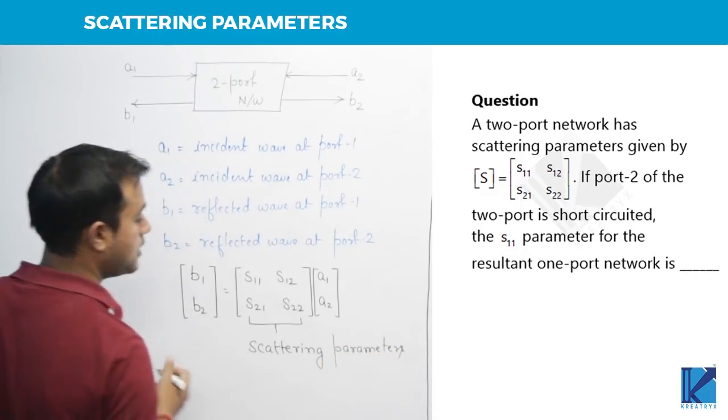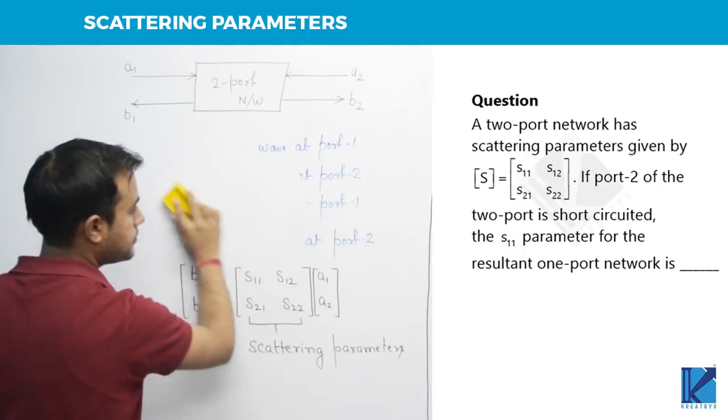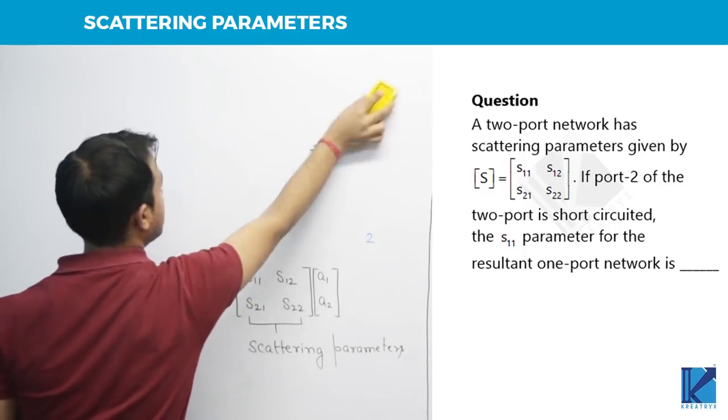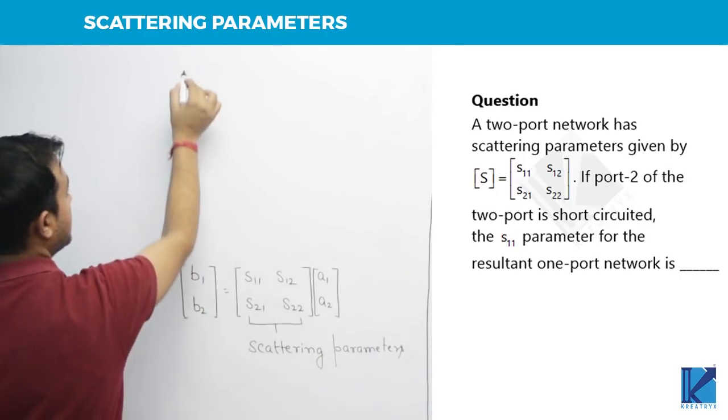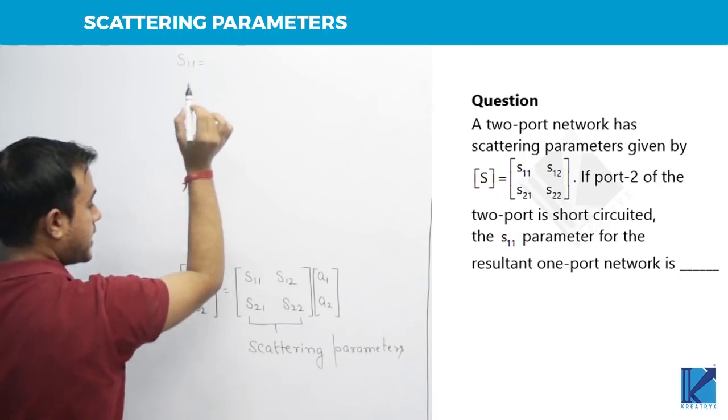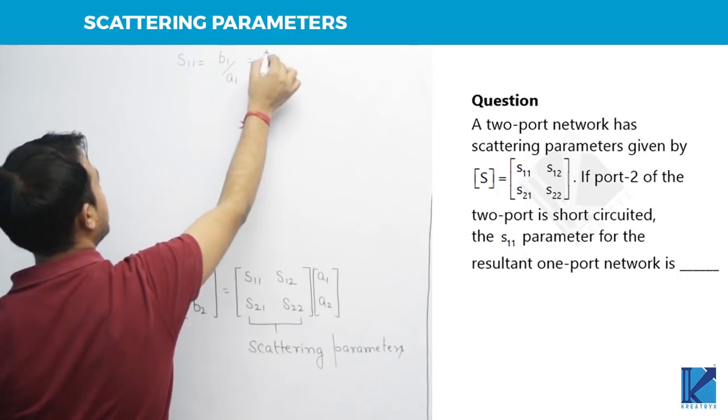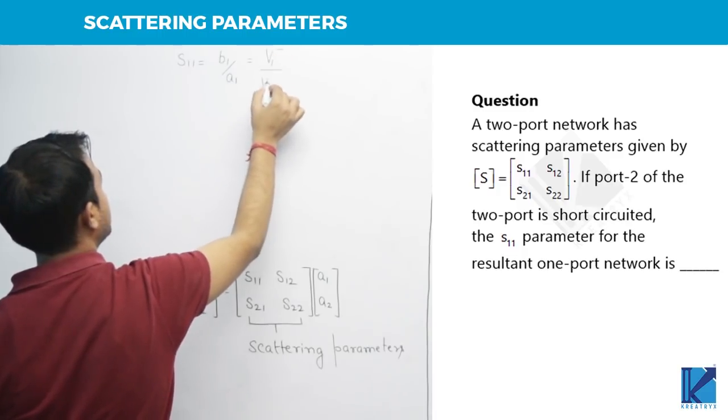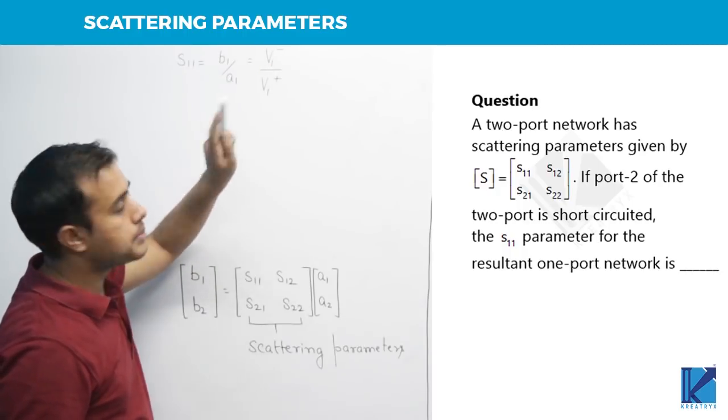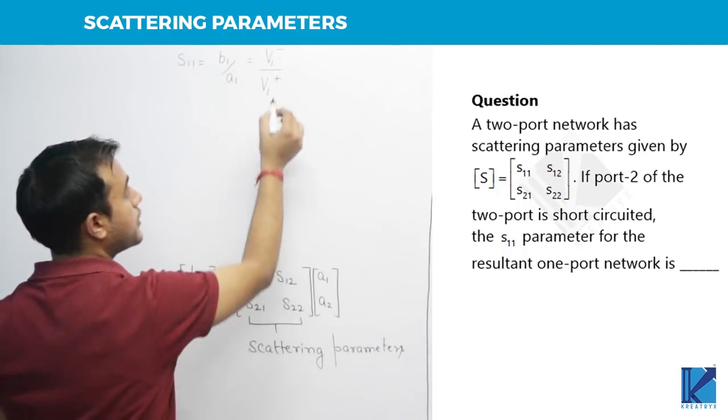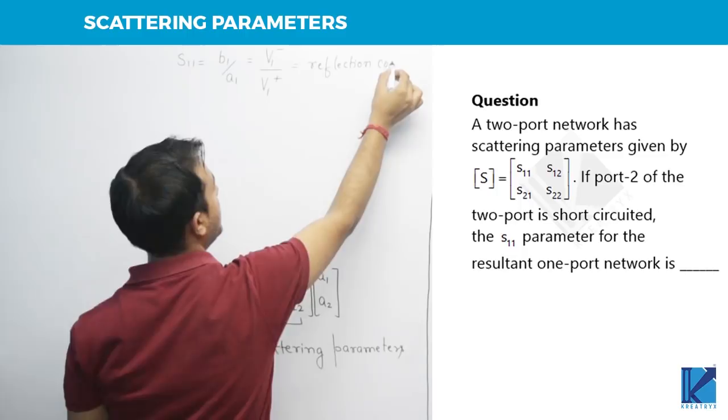Now what is their physical significance? So first of all, S11 will be calculated how? It will be B1 upon A1. B1 is basically reflected wave at port 1. Negative sign indicates reflected, positive sign indicates incident. So reflected upon incident is nothing but reflection coefficient.